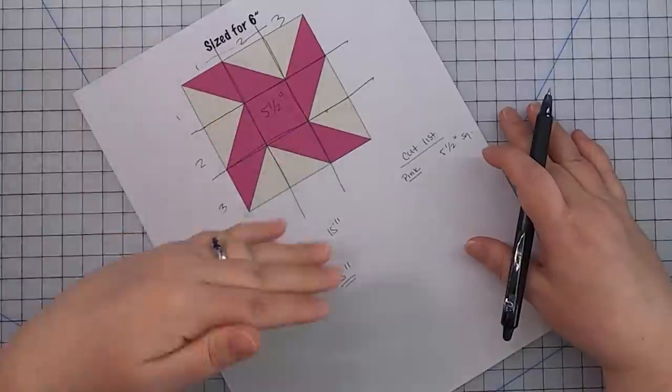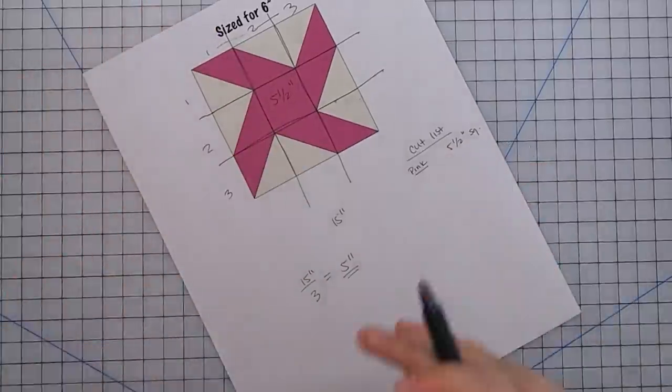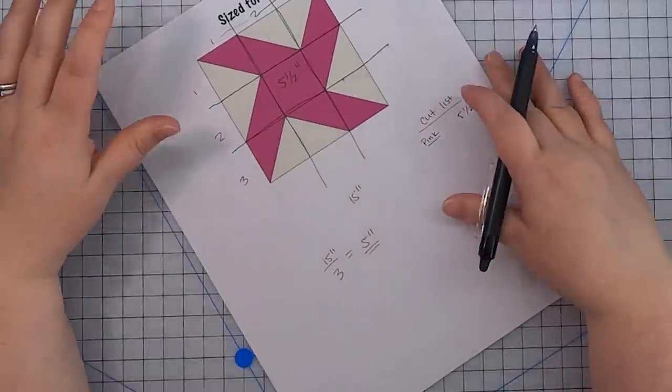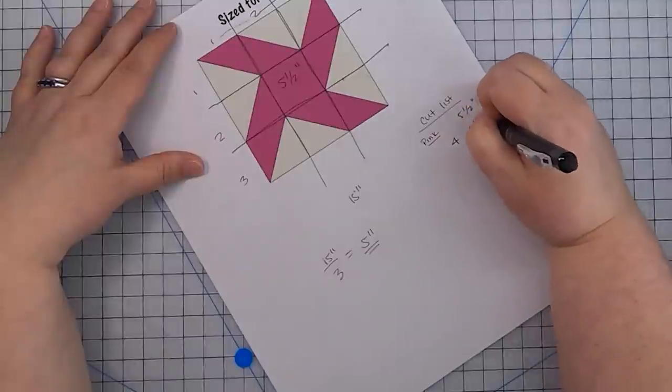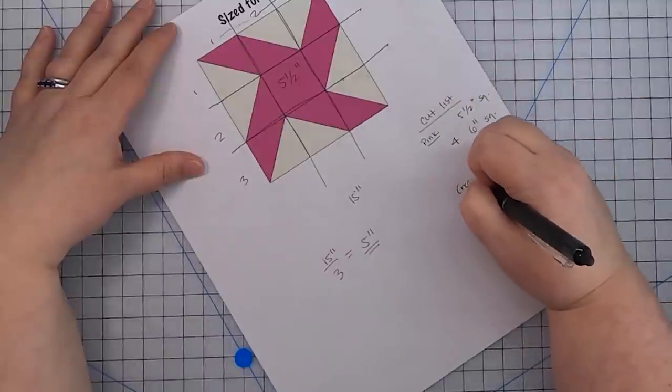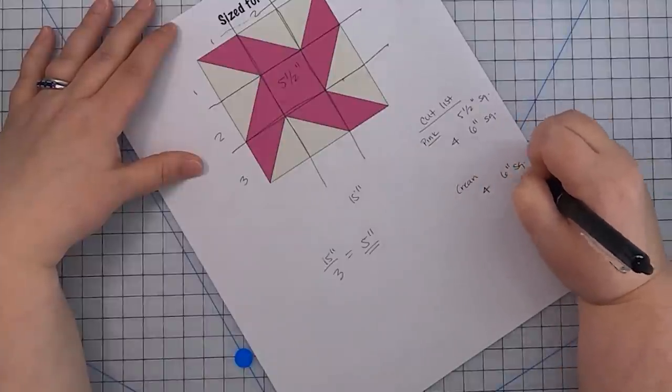So now that we have our center square taken care of, it's time to deal with these half square triangles that go around that center square. Now there are many ways to make half square triangles. And I have a whole video on how to do the math to make various methods. But let's assume we want to make two at a time half square triangles here. So we have eight half square triangles in our finished block. So we're going to need to make four sets of two at a time half square triangles. So to end up with a five inch finished half square triangle, I know that I want to cut six inch squares from my fabrics so that I have room to sew them together to make the half square triangles and also to trim them just a little bit. So I am going to need four six inch squares of pink.